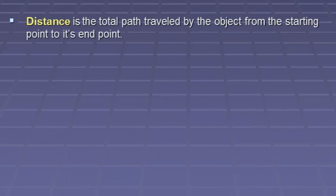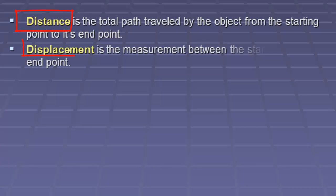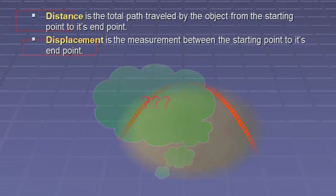Well, once we have a coordinate system, we can say distance is the total path traveled by the object from the starting point to its end point. And then displacement is a measurement between the starting point to its end point. And what the heck is the difference between those two words?